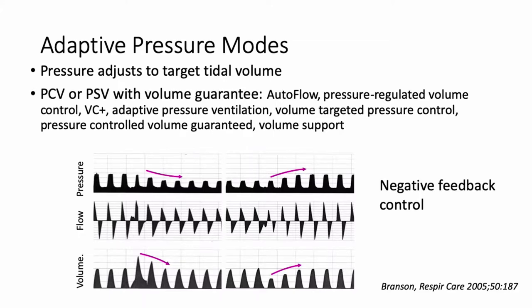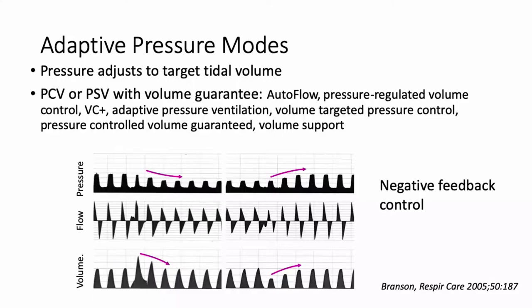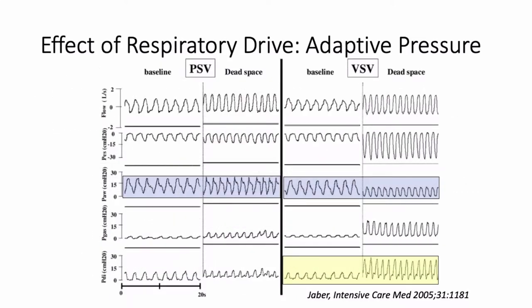How this works is that if the tidal volume increases, the ventilator will decrease the level of pressure control or pressure support to bring the tidal volume back to the target. Or if the tidal volume goes down, the ventilator will increase the level of pressure in an attempt to maintain the tidal volume. This is a form of negative feedback control. The question is: is this good, or are there unintended consequences? I would submit that there may be some unintended consequences with adaptive pressure control or adaptive pressure support.